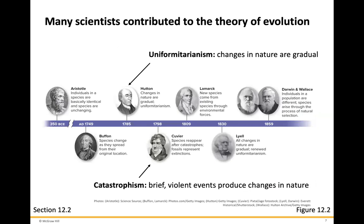Many scientists, starting back from Aristotle, all the way up through Darwin and Wallace, have contributed to the theory of evolution. With Aristotle, individuals and the species are basically identical and species are unchanging. Obviously, we know that's not the case. Hutton came up with the idea that changes in nature are gradual, coining the term uniformitarianism.